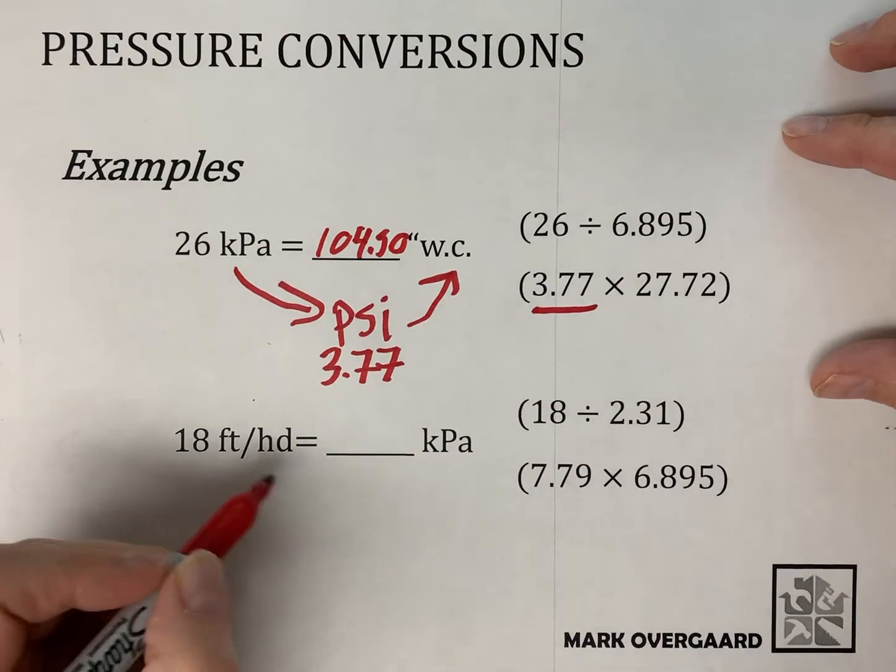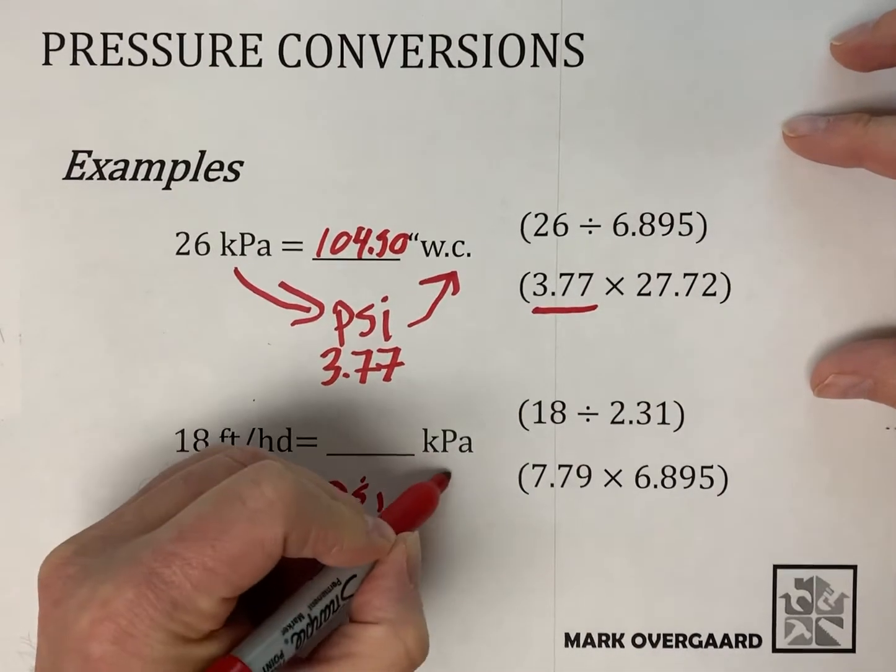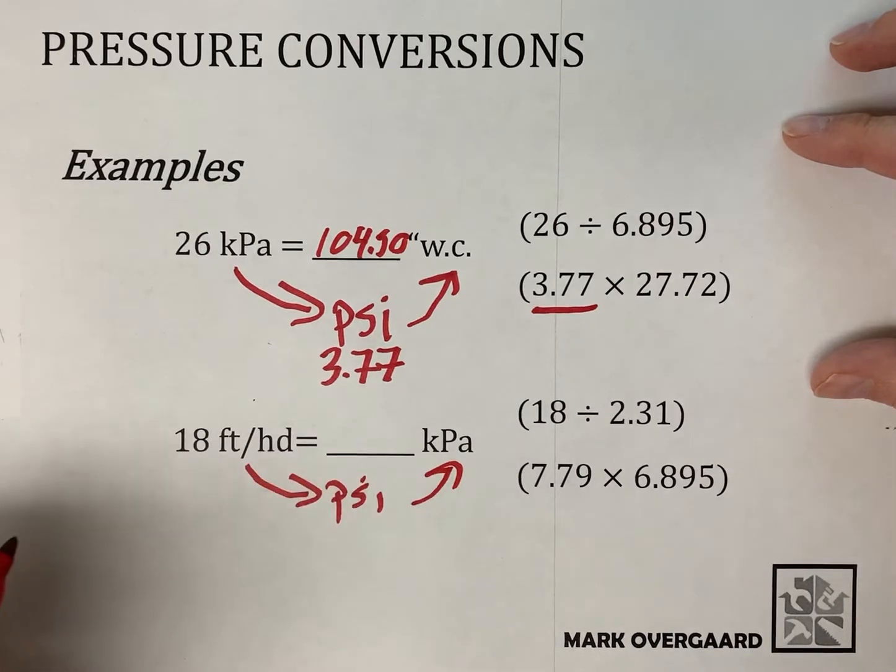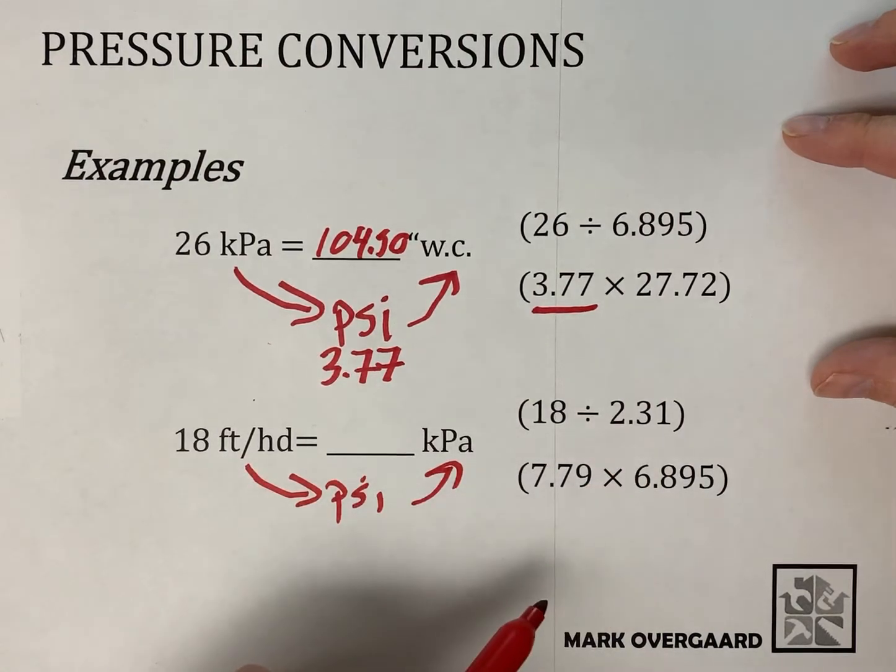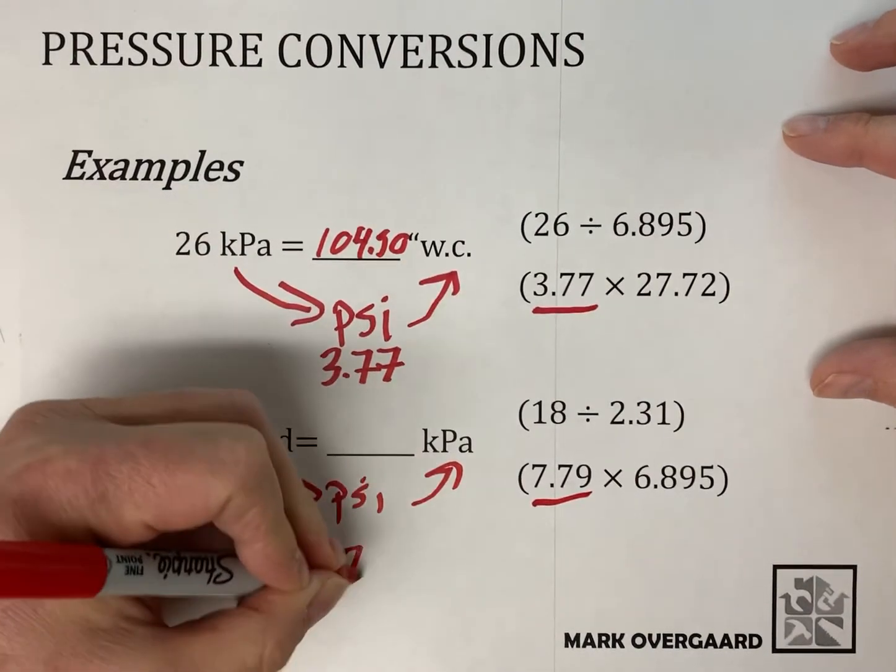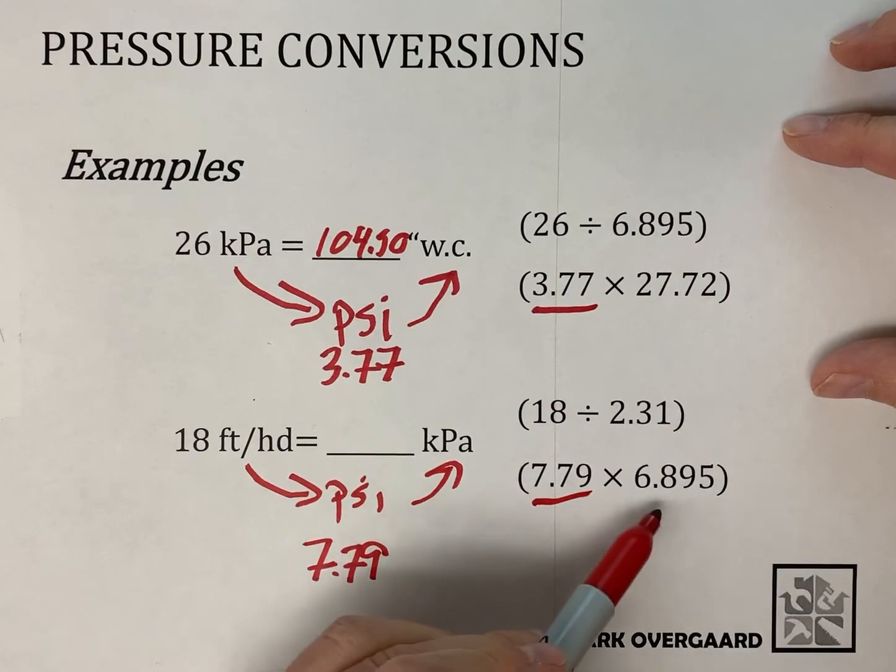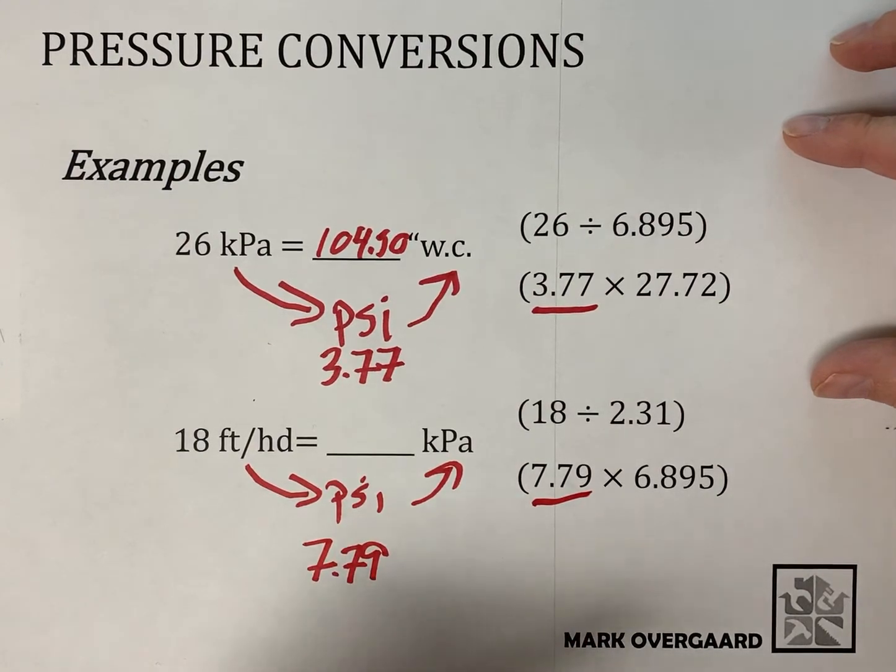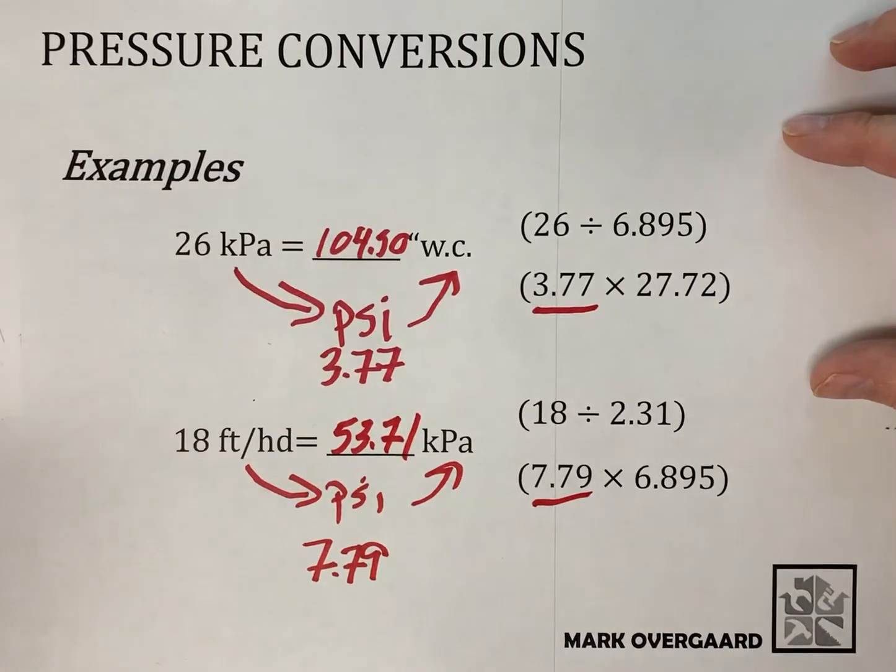Same thing here. Feet of head, translate to PSI, roll it up to a kPa. Gold. 18 feet of head. Well, we have 2.31 feet of head for PSI, so we're going to get a number 7.79. And then we know to get to kPa for every PSI at 6.895, and we get 53.71.